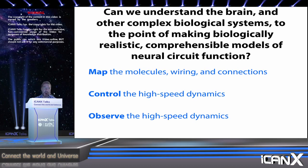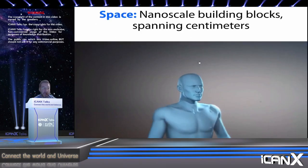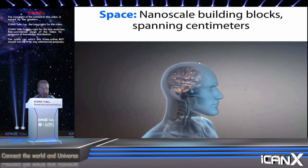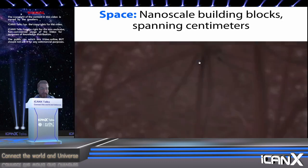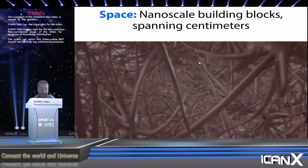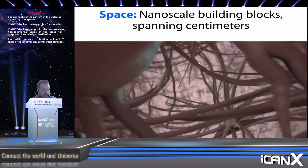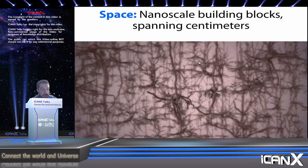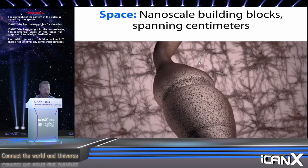First, how can we map the molecules throughout brain cells and the brain cells throughout the brain? There are roughly 30,000 genes in the human genome, and countless gene products make the brain cells do what they do. Second, there are high-speed dynamics of these molecules — electrical activities, chemical activities, and so forth. How can we control these processes? And finally, how can we watch all these processes in action? Part of the problem is that the brain has incredibly complicated spatial and temporal scales. Brain cells are enormous — they can be centimeters in spatial extent in the human brain. But the wiring of the brain, so-called axons and dendrites, and the connections between brain cells called synapses, are nanoscale and configured with nanoscale precision.